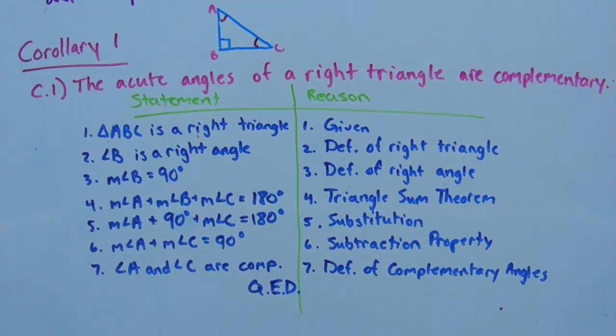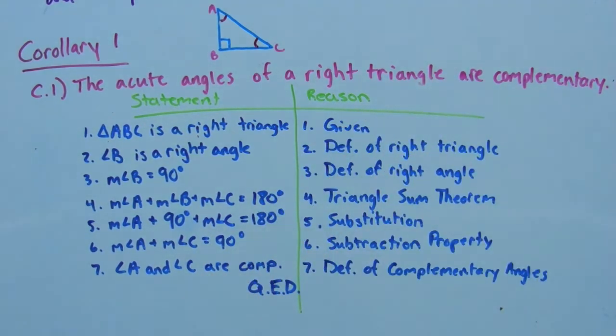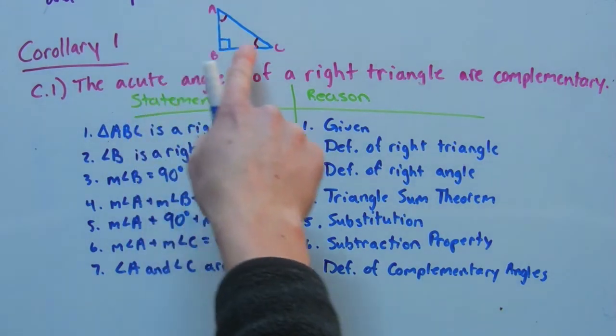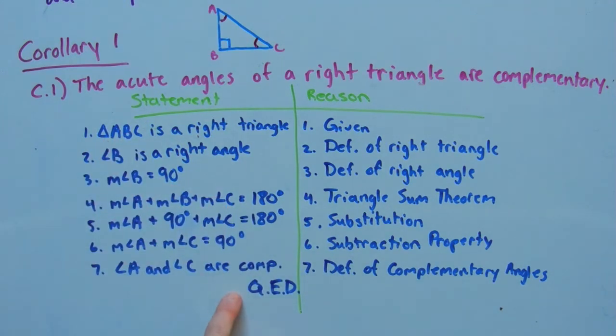And that is what we needed to prove: that the acute angles of a right triangle are complementary. And we concluded that angle A and angle C, the acute angles of the right triangle ABC, are complementary.